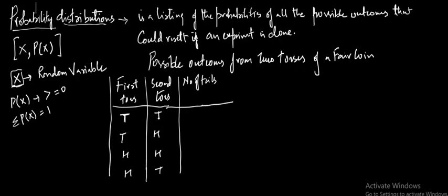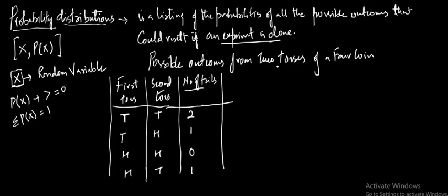The number of tails that could occur are 2, 1, 0, and 1. This is the scenario that when I conduct an experiment, I come to know how many tails are going to occur when I make 2 tosses of a fair coin. Now from this I can build up the probability distribution. Since I have 0 tails, 1 tail, and 2 tails, there are 3 basic possibilities.